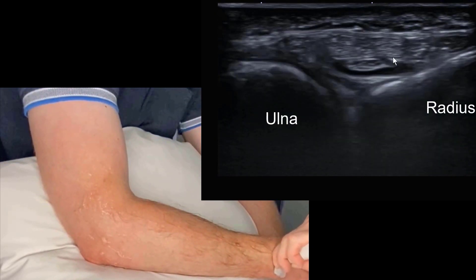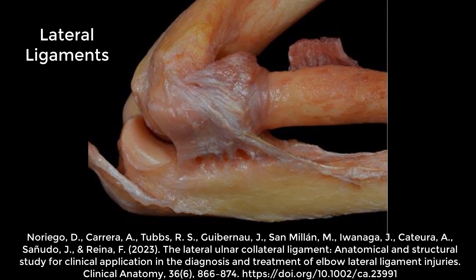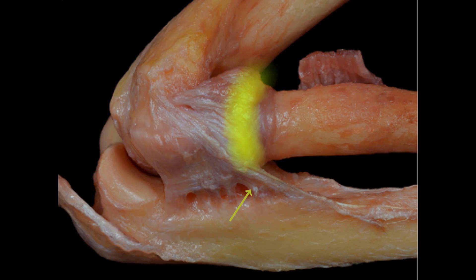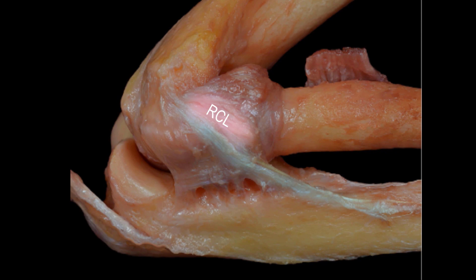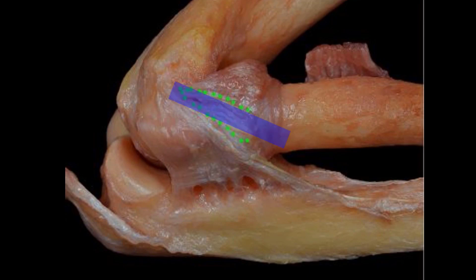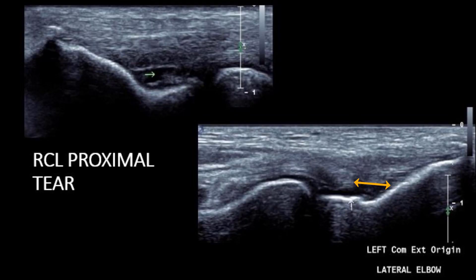Moving on to the lateral collateral ligaments — we'll talk about three main ligaments. The first is the annular ligament, its insertion shown with a yellow arrow: it encircles the radial head. There's the radial collateral ligament which inserts into the annular ligament, and posterior to that is the lateral ulna collateral ligament — you can see how it's oriented towards the ulna, inserting into the supinated crest. If we place our probe over the radial collateral ligament we may detect ligament tears at the proximal origin.